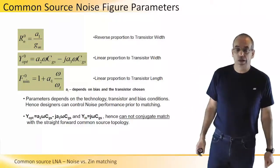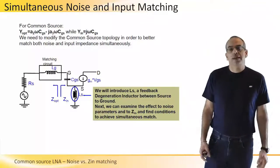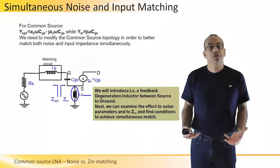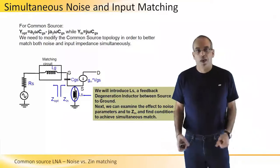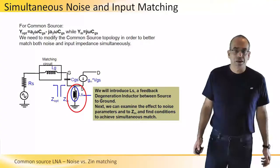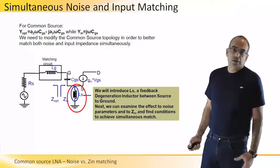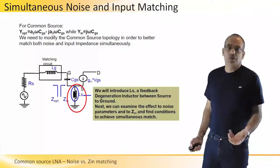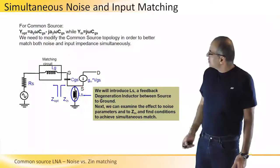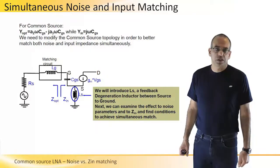A simple common source topology cannot satisfy both minimum noise figure and input impedance matching simultaneously, because Y_in has no real part, causing reflections between the LNA and antenna that degrade gain and performance. To resolve this, we need to change the topology — a common approach is adding Ls, a source inductor, which may enable simultaneous noise and input matching. This Ls is referred to in the literature as the degeneration inductor.